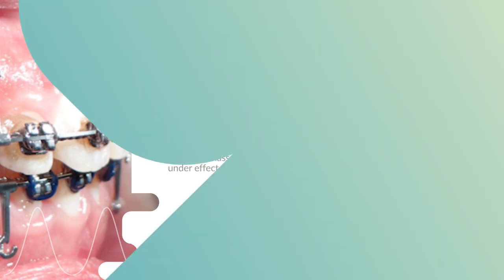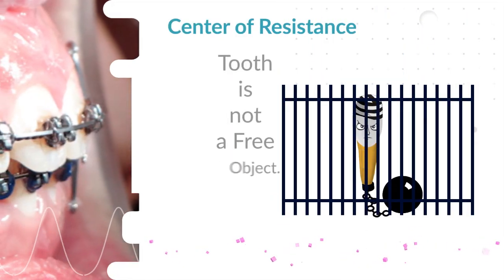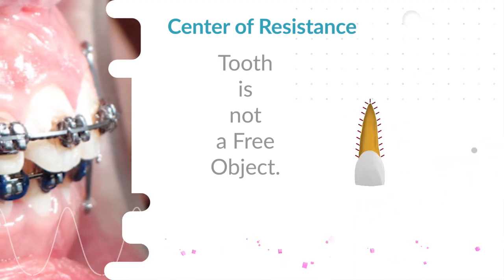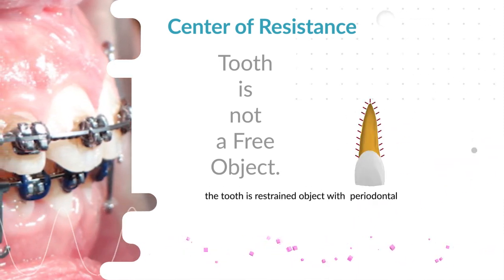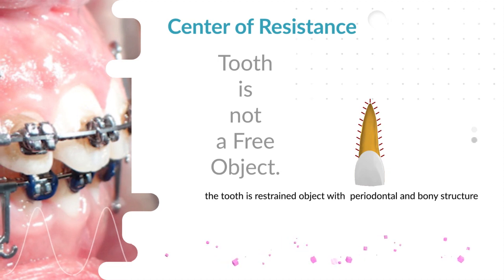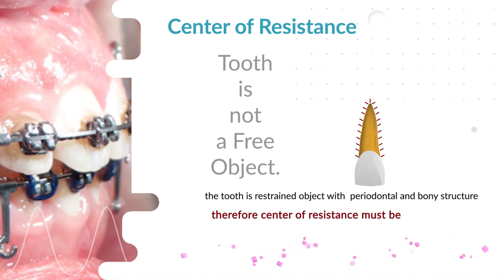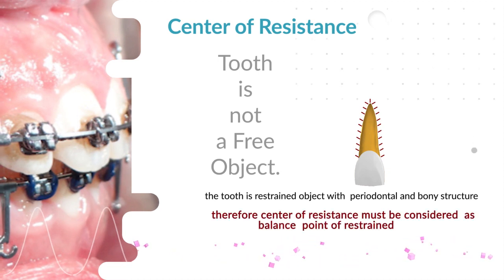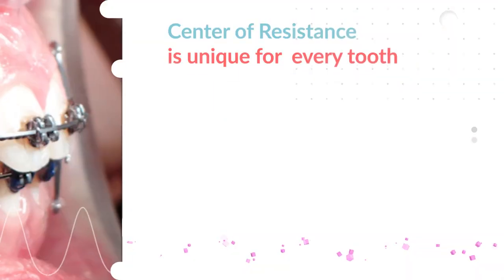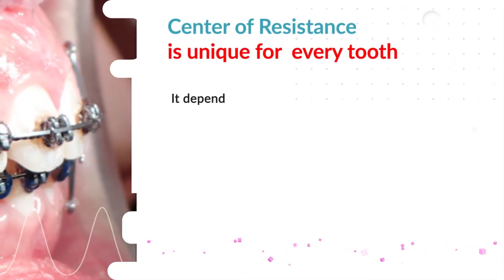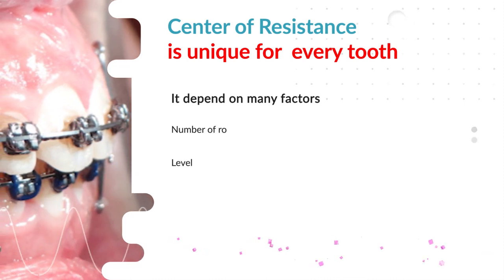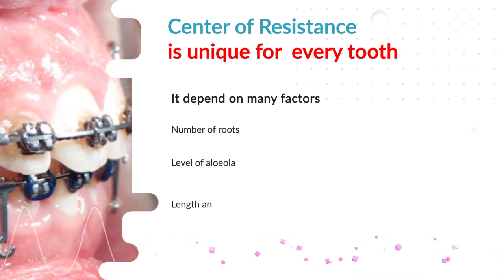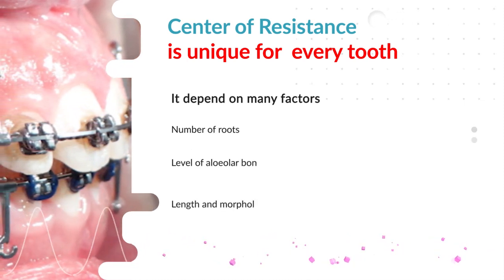But a tooth is not a free object. A tooth is a restrained object within the periodontal and bony structure. Therefore, the center of resistance must be considered as the balance point of a restrained object. Center of resistance is unique for every tooth and depends on many factors: number of roots, level of alveolar bone, and length and morphology of the root.